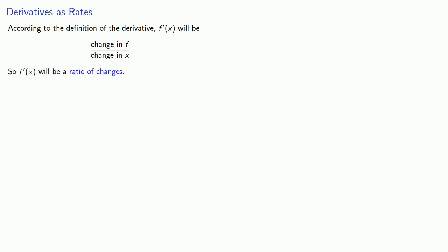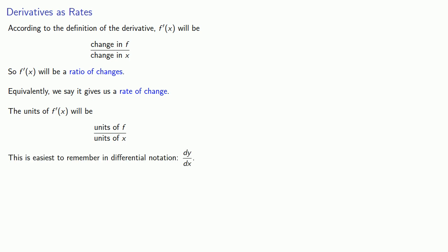And so that means that f prime of x will be a ratio of changes, and equivalently we say it gives us a rate of change. Now importantly, the units of f prime of x are going to be the units of f divided by the units of x. And this is actually easiest to remember when we write it in differential notation dy over dx.